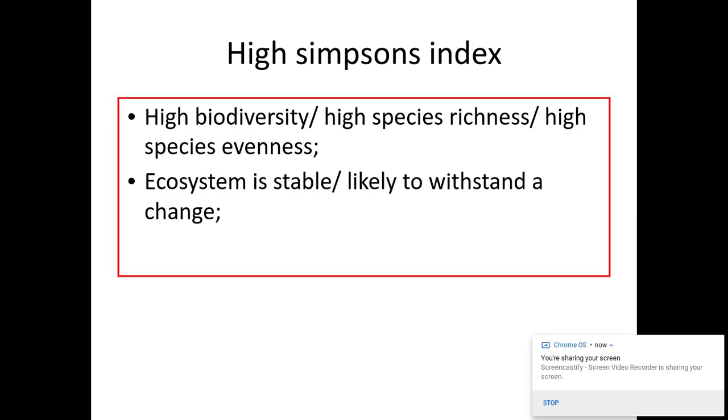So I'm going to show you an example of that in a second. But when you run that formula, you will get a number, and the numbers go between 0 and 1. If the number is closest to 1, you have a high Simpson's index of diversity, and this means that you have a high biodiversity, you have a high species richness, and a high species evenness. This also means that because you have this high species richness and evenness, that the ecosystem is more stable and more likely to be able to withstand a change. This is in a red box because it is taken directly from the mark scheme.